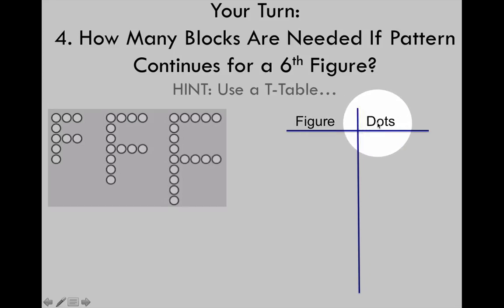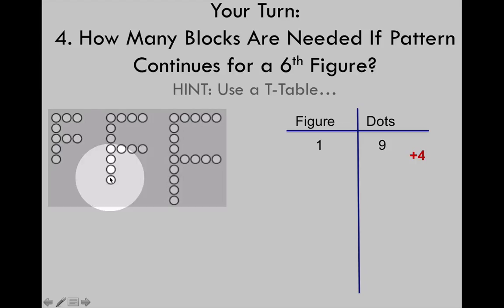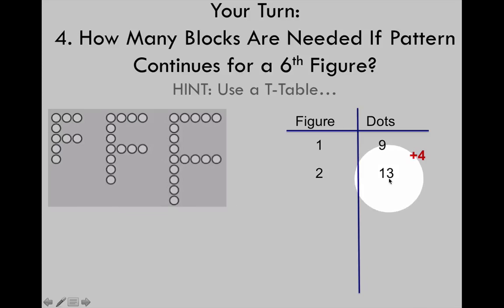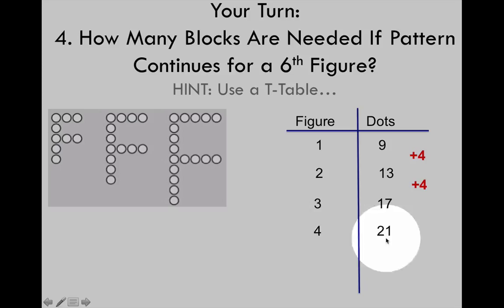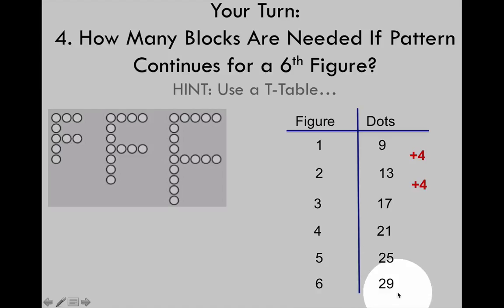We've added the titles 'figure' and 'dots.' Figure 1 had 9 dots, and then there was an increase of 4 — two dots were added to the bottom and one to each arm. So figure 2 used 13 dots. An additional 4 dots were added to figure 3, so figure 3 used 17 dots. Continuing this pattern, we don't even need pictures: figure 4 uses 21 dots, figure 5 uses 25 dots, and figure 6 requires 29 dots.